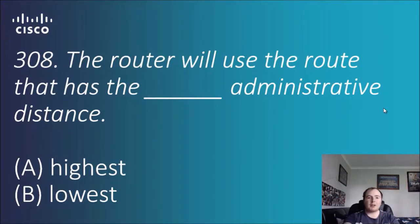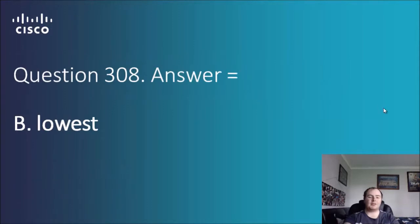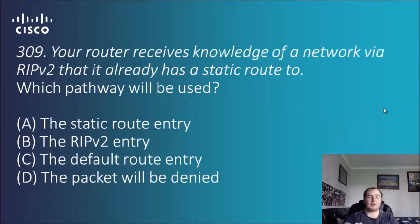Question 308: the router will use the route that has the blank administrative distance — highest or lowest? It's going to use the lowest administrative distance. Obviously, the lower the number, the more trusted the network is. It will add multiple paths and then choose the most reliable path based on a number value — the lower the number, the better the route.